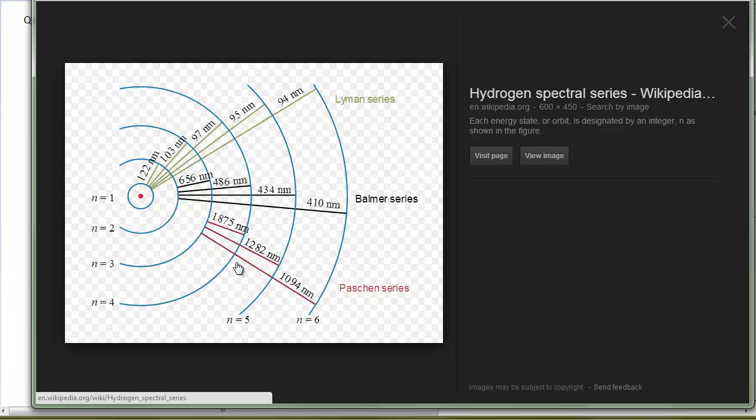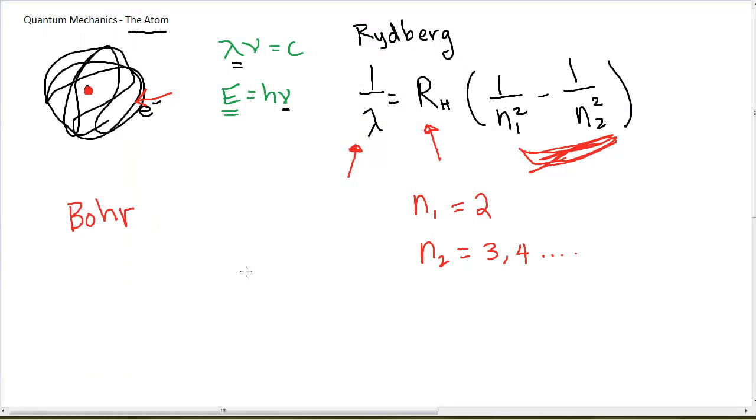and everybody was so happy because now we know what an atom looks like. It has a nucleus, and the electrons are orbiting around the nucleus at these levels. We'll call them n equals 1, n equals 2, and so on. And everything was good except for it didn't work unless you were talking about hydrogen.